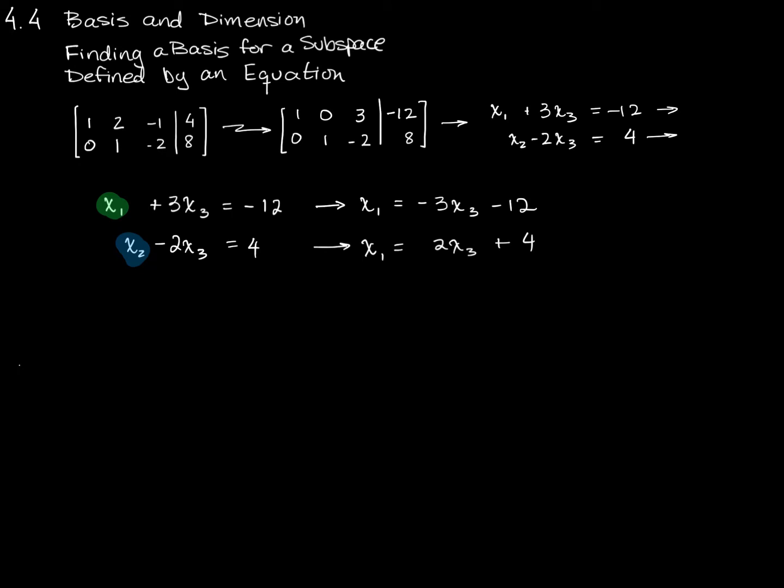And for this equation, I get x2 equals 2x3 plus 4. And so what I have here is an x1, an x2, and an x3. This is my solution vector, I would call it now. But what I know about x1 is that I can write it as negative 3x3 minus 12. And what I know about x2 is that I can write it as 2x3 plus 4.